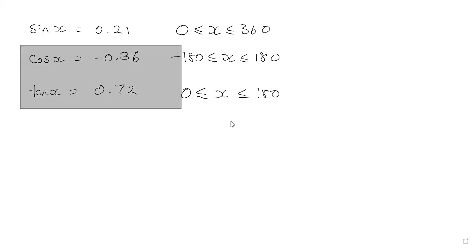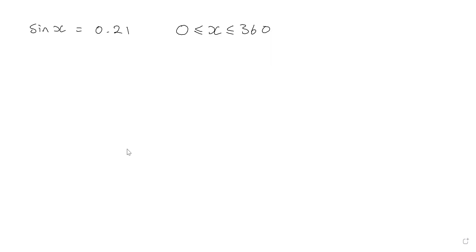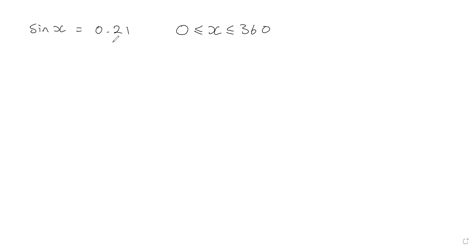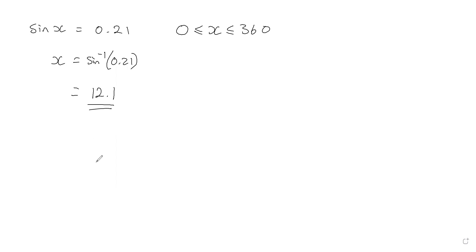Let's focus on sine x equals 0.21. Assuming your GCSE maths is fresh, you might think: why don't I just do sin⁻¹ of both sides? Grab a calculator and work along with me. If you do sin⁻¹(0.21) you get 12.1 — I'm going to one decimal place. Now you might think that's your answer, and since 12.1 falls into the 0 to 360 range, you're done.